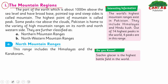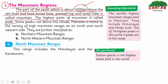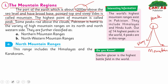The first region is the mountain region. The part of the earth which is about one thousand meters above the sea level and has a broad base, pointed top, and steep sides is called a mountain. That elevated part of land which is more than one thousand meters and has steep sides is called a mountain. The highest point on a mountain is called the peak.